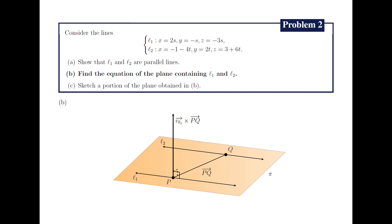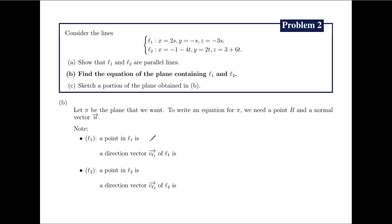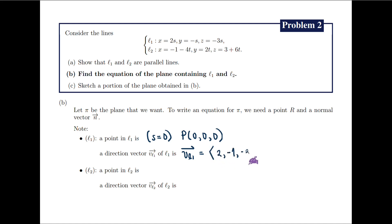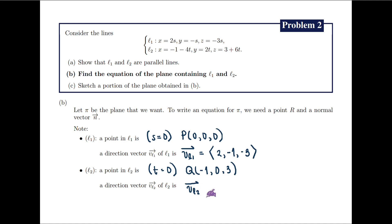Now we write this more concretely. For L1, by taking s equal 0, we get a point P in L1 with coordinates 0, 0, and 0. Moreover, by looking at the coefficients of s, we can take its direction vector v_L1 to be the vector with coordinates 2, negative 1, and negative 3. For L2, by taking t equal 0, we get a point Q in L2 with coordinates negative 1, 0, and 3. Similarly, the direction vector v_L2 of L2 is the vector with coordinates negative 4, 2, and 6.